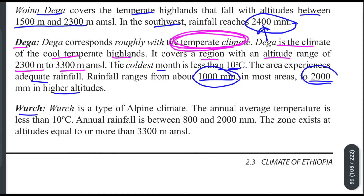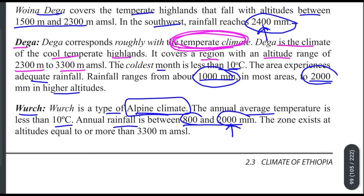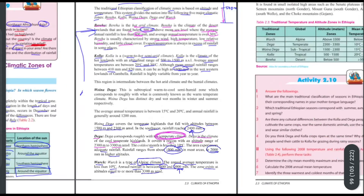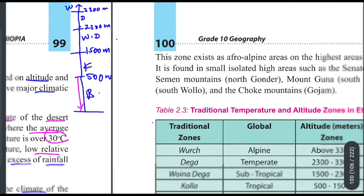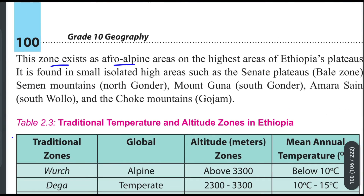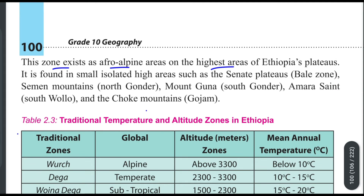The average temperature in this zone is around 10 degrees centigrade. The alpine zone exists at altitudes above 3,300 meters. It is found in small, isolated high areas throughout the country.